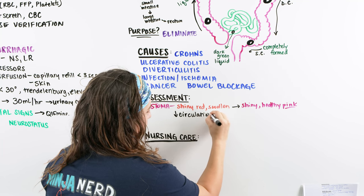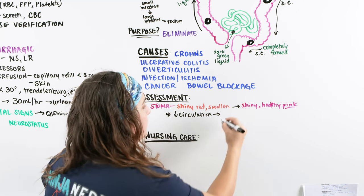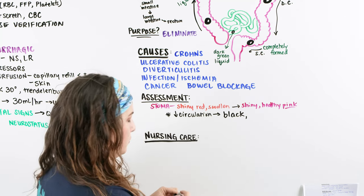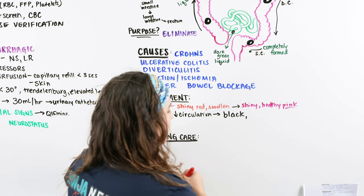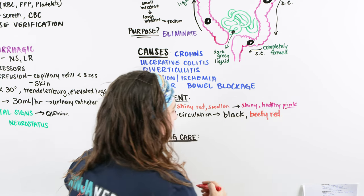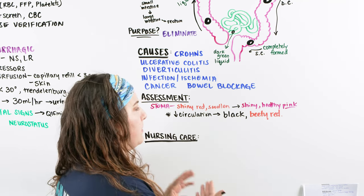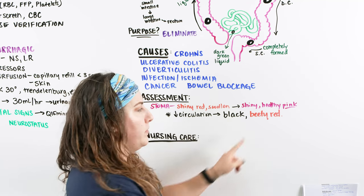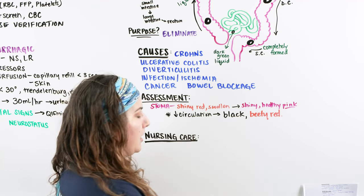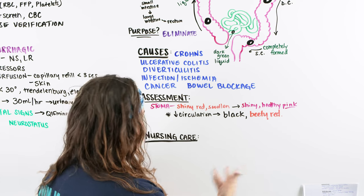We are going to be looking out for signs of decreased circulation. If the stoma is black, that's a very bad sign — it may already be too far gone and we may have to create a new one. If it is really beefy red — meaning the stoma itself or the skin right around it is very red and irritated — those are signs of compromised circulation or possibly some type of infection. We want to make sure we are teaching our patient what to look for in their stoma assessment.